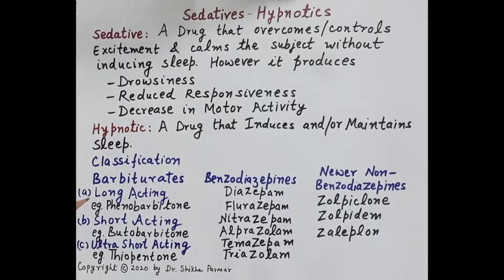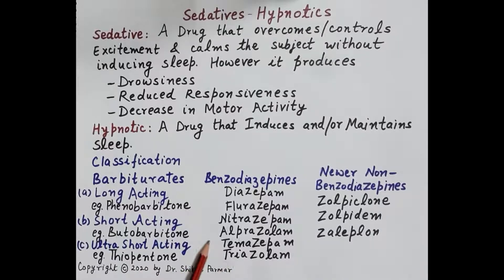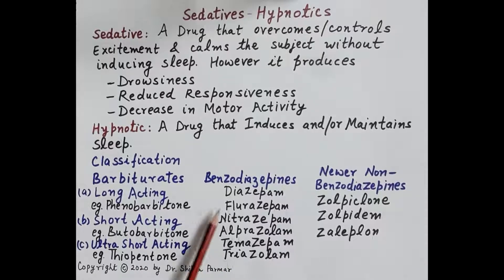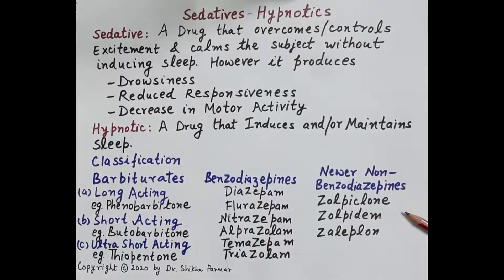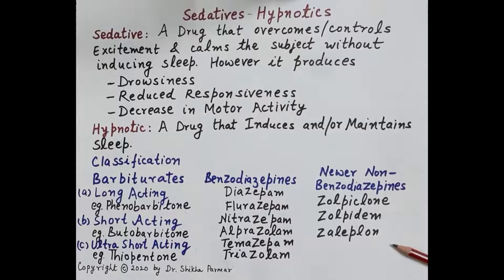The second category of drugs are the benzodiazepines, for example diazepam, flurazepam, nitrazepam, alprazolam, temazepam, and triazolam. The third category are the newer non-benzodiazepines, for example zopiclone, zolpidem, and zaleplon. These are the drugs which are preferred over the first and second category for the treatment of insomnia.